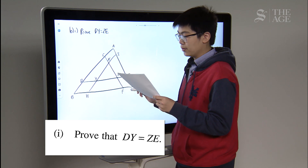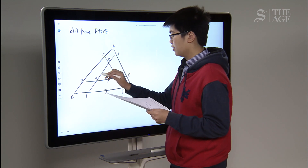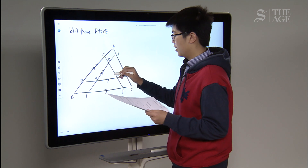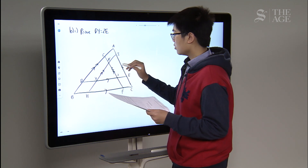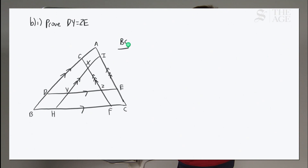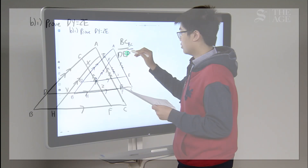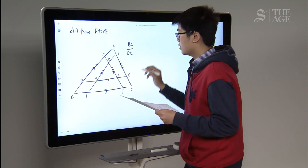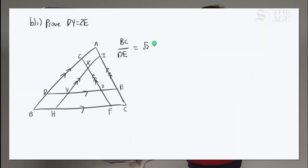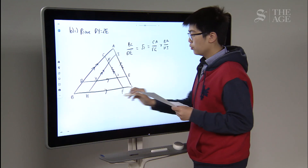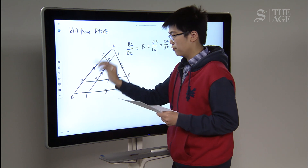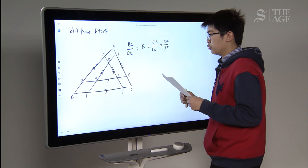In this triangle there are many parallel lines — there's this one, that one, and a third one. It's also given that BC over DE, which are these two lengths, is equal to root 2. Similarly, it's equal to CA over FG, which are these two lengths, and BA over HI. So all of these ratios of these three pairs of sides are in a ratio of root 2.